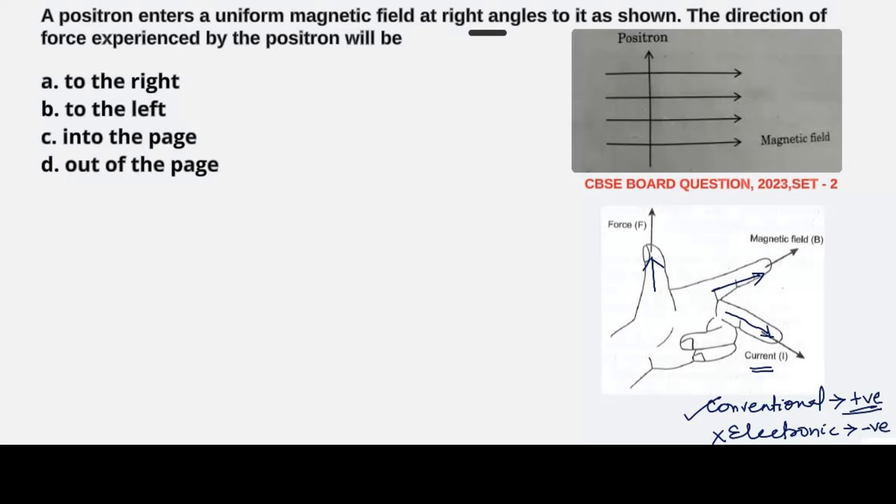Here we see a positron moving. Positron means it's a positively charged particle, so our current direction will be along the y-axis. Now magnetic field is along the x-axis. So this is positive y, this is positive x. These two are mutually perpendicular to each other.